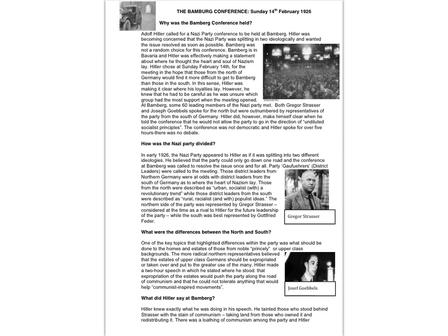How was the party divided? In early 1926, the Nazi party appeared to Hitler as if it was splitting into two different ideologies, two different systems of belief. He believed that the party could only go down one road, and the conference at Bamberg was called to resolve the issue once and for all. Party leaders — gauleiters, district leaders — were called into the meeting. Those district leaders from northern Germany were at odds with those from the south as to where the heart of Nazism lay. Those from the north were described as urban socialist with a revolutionary trend, while those district leaders from the south were described as rural, racialist, and with populist ideas. The northern side of the party was represented by Gregor Strasser, considered at the time as a rival to Hitler for the future leadership of the party, while the south was best represented by Gottfried Feder.